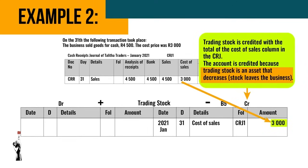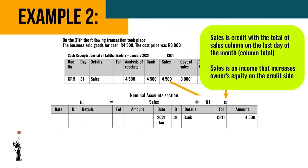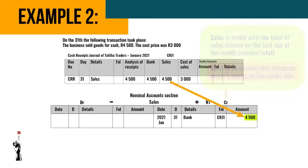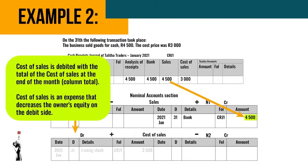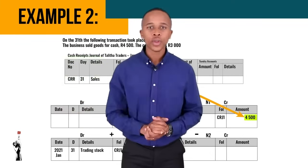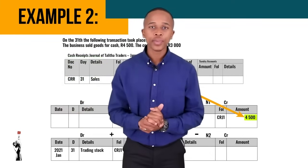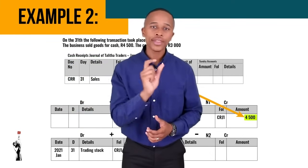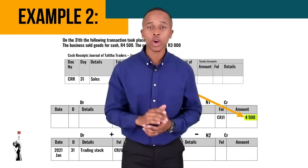Sales is credited with the total of the sales column on the last day of the month — column total. Sales is an income that increases owner's equity on the credit side. Cost of sales is debited with the total of the cost of sales column at the end of the month. Cost of sales is an expense that decreases owner's equity on the debit side. Take some time to reflect and understand why the amounts are placed in the columns that they are.